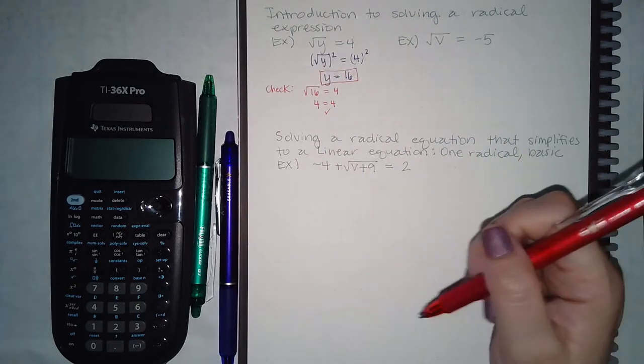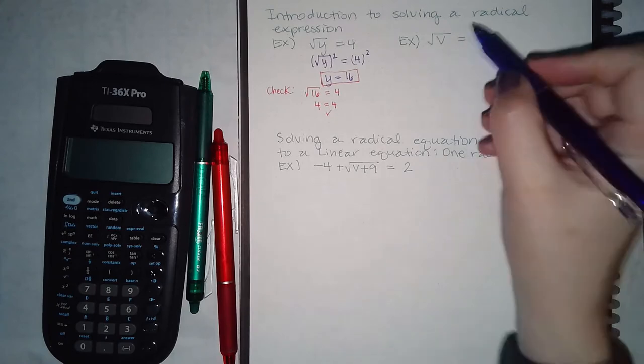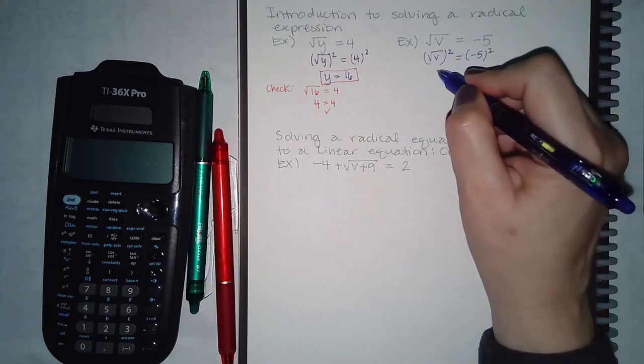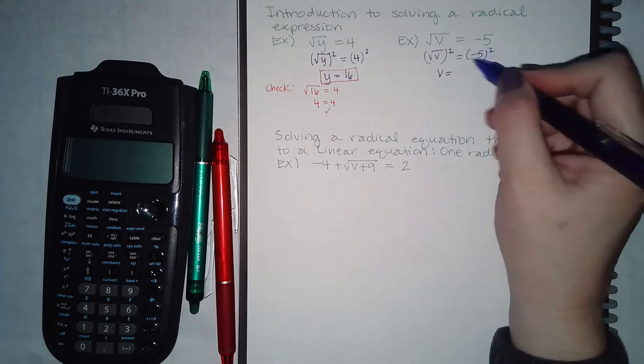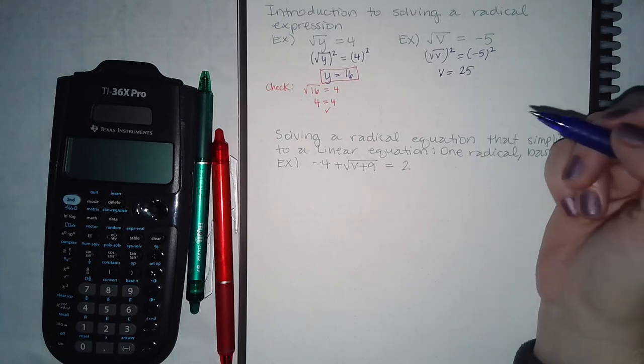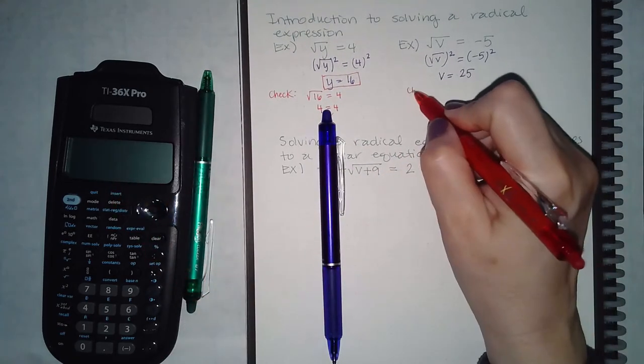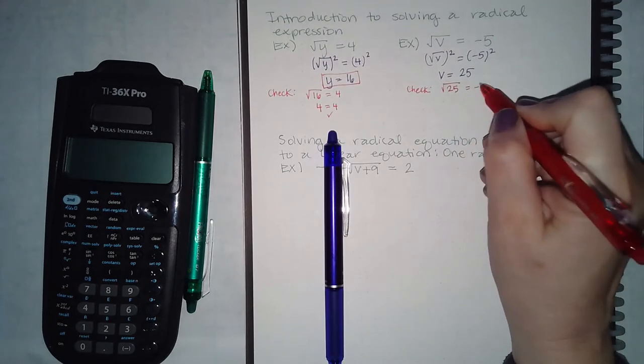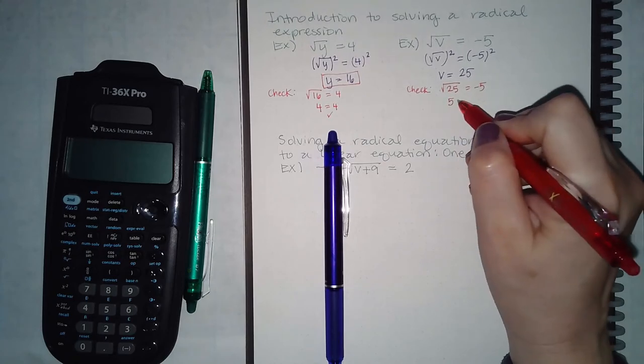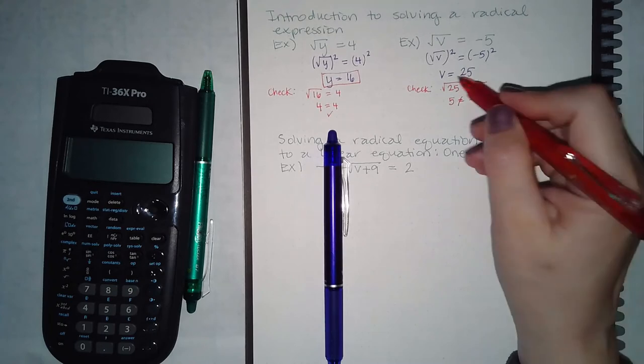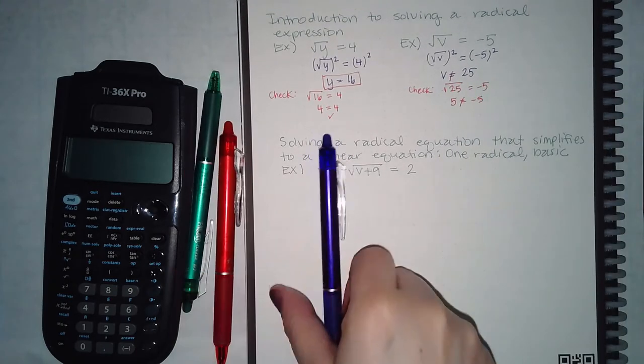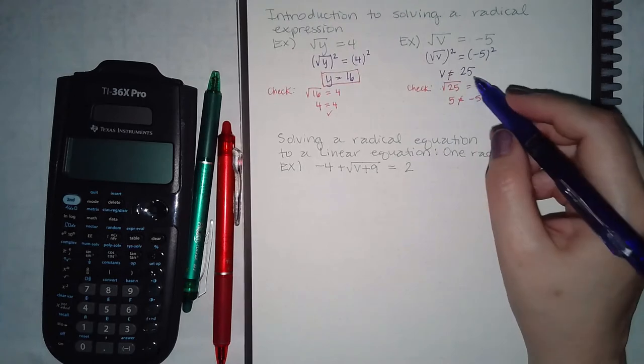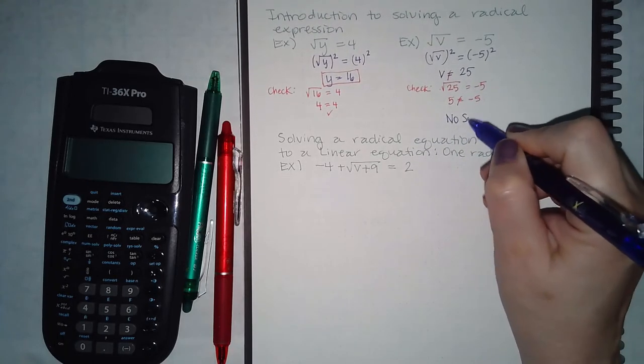For the next problem, to get rid of the root I would square both sides. That makes the root cancel. Here, negative 5 squared means negative 5 times another negative 5, which gives me positive 25. But when I check that response, plugging in 25 for v - remember this is a positive root, so I only get positive 5, and these are not equivalent. So v cannot equal 25. I did get an answer, but it's one of those extraneous solutions - it doesn't actually check out. Since the one answer I got didn't work, my response would be no solution.